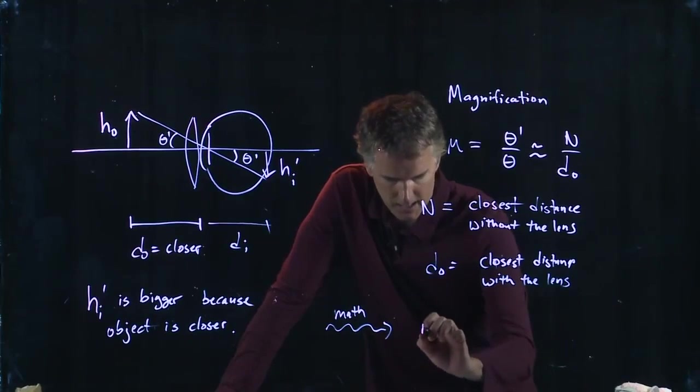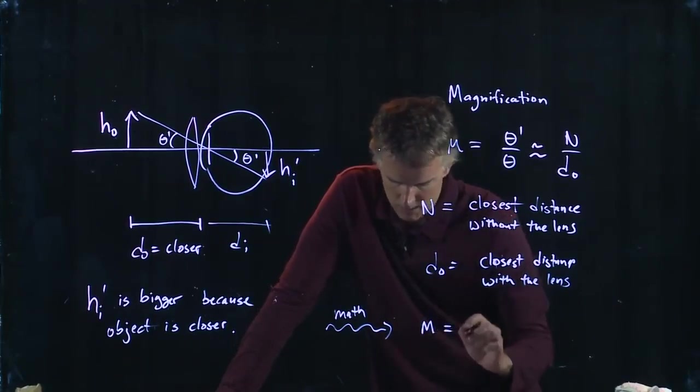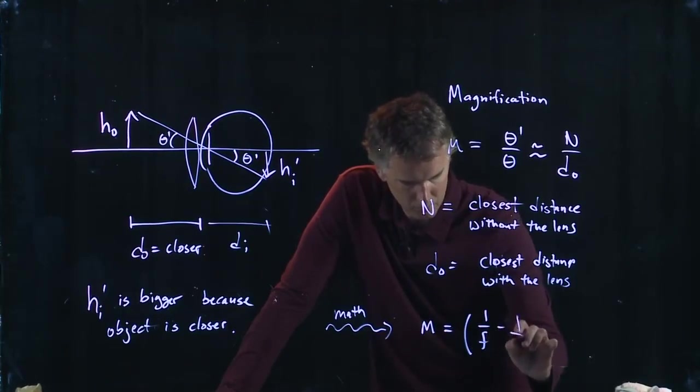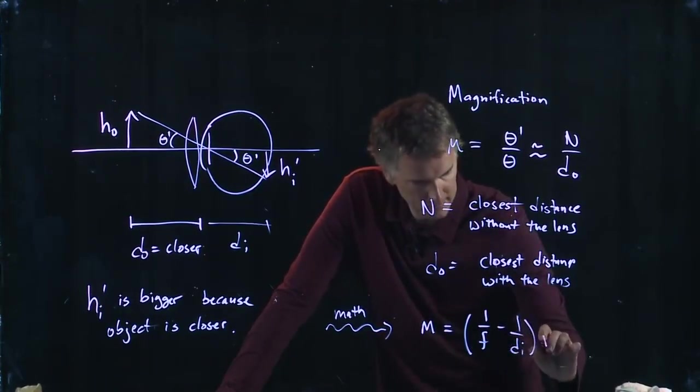And what you can find is the magnification is going to be 1 over F minus 1 over d_i, all of that times N.